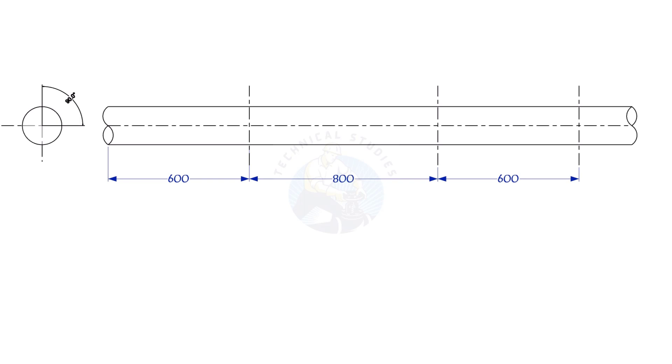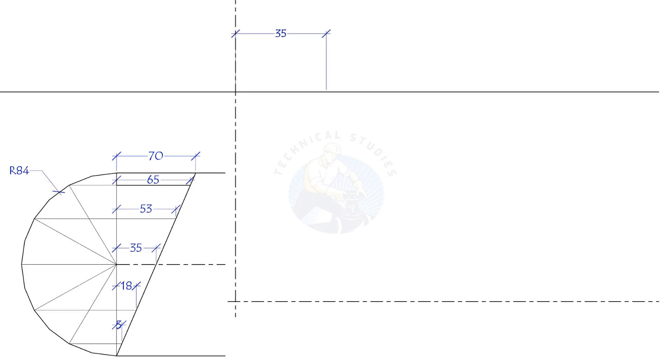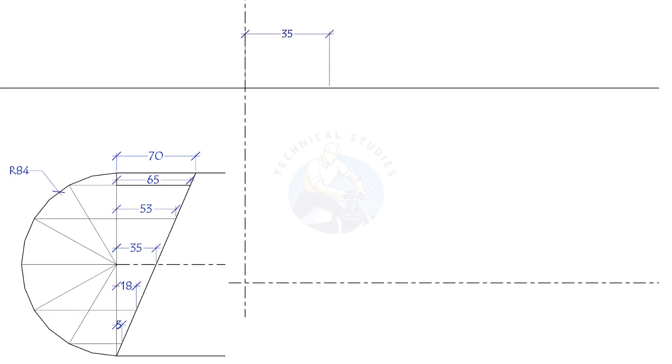Mark 35 mm to the right on the top side line and 35 mm to the left side on the bottom line. Draw a smooth curve connecting these points.